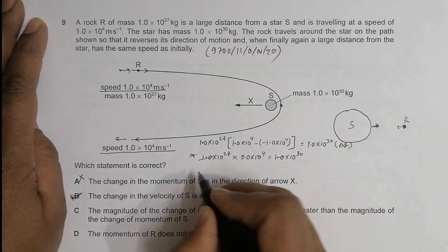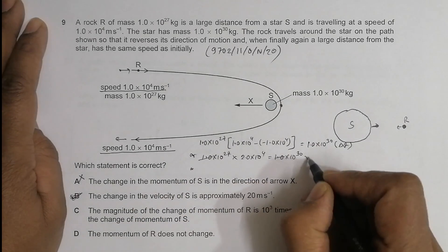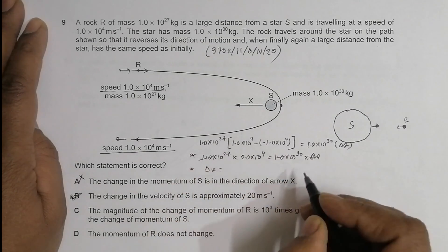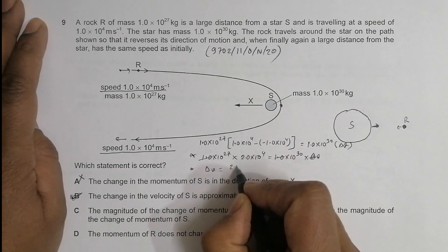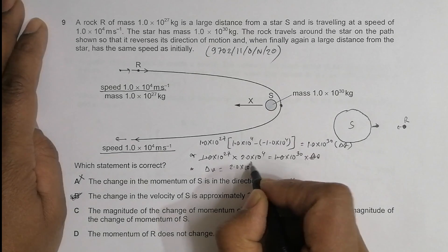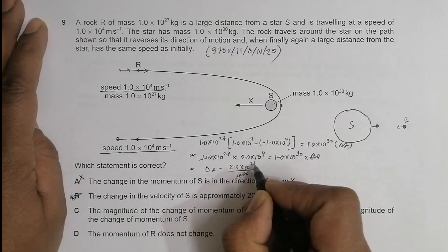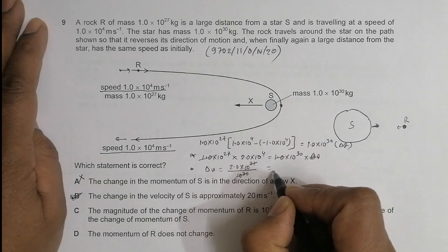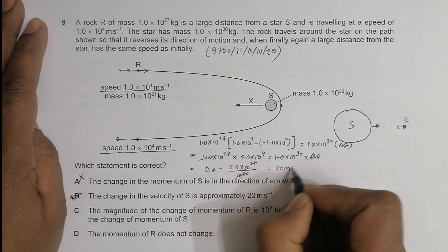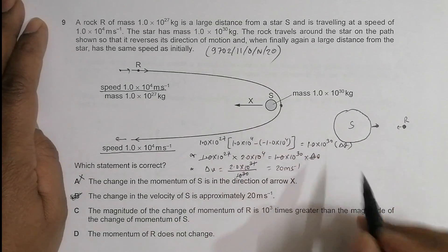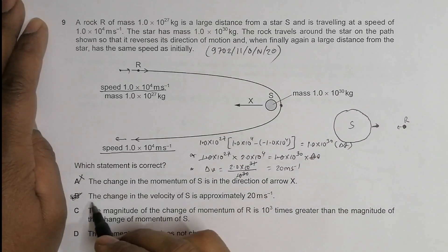Therefore ΔV equals 2.0×10³¹ divided by 10³⁰. This cancels to 2.0×10¹, which is 20 meters per second. So the change in velocity of S is equal to 20 m/s. Option B is correct.